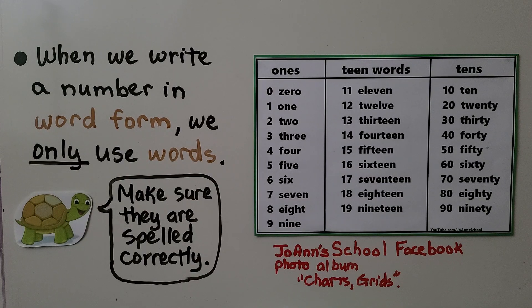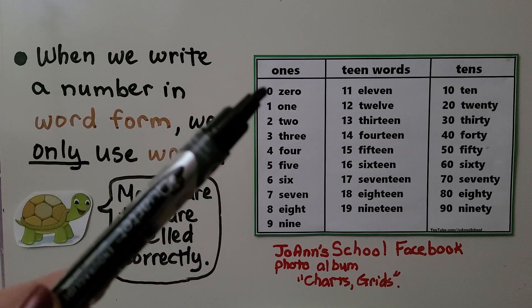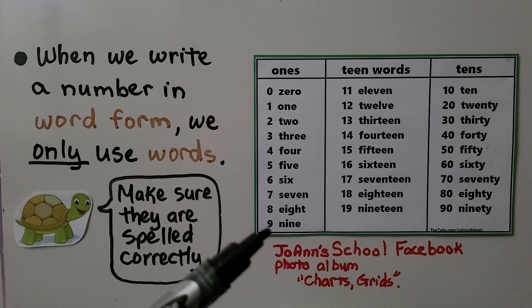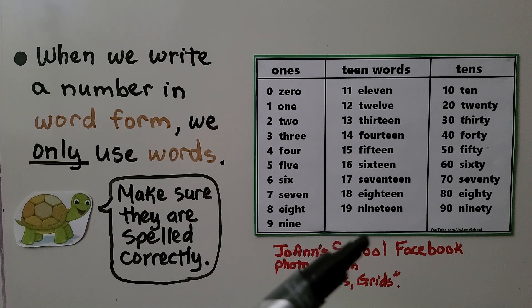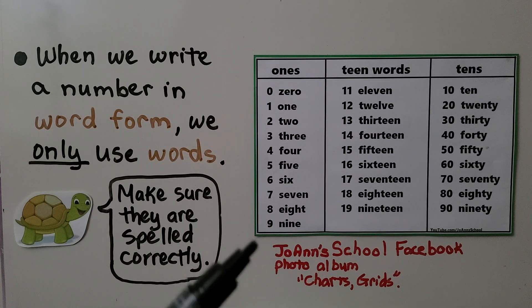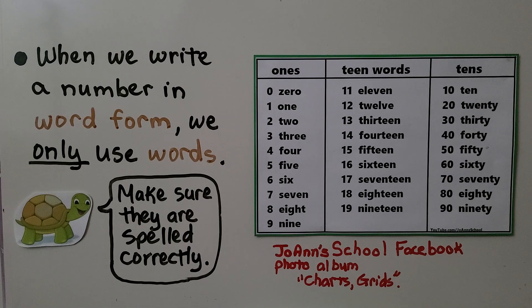When we write a number in word form, we only use words, and we make sure they're spelled correctly. Here's a chart of all the digits in the ones, some teen words, and the tens. I'll have a copy of this chart on my Joanne School Facebook page in the photo album Charts and Grids — you can print it if you want.